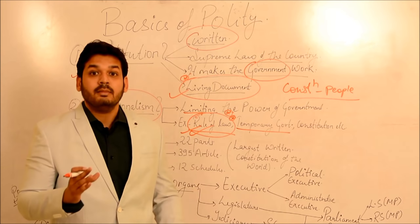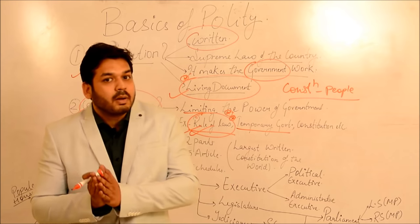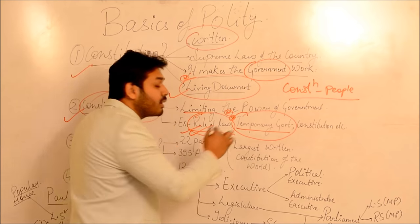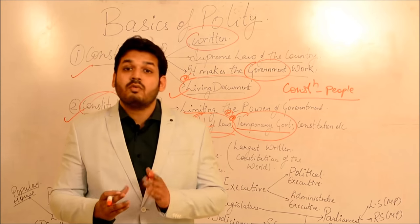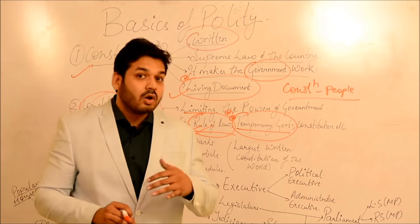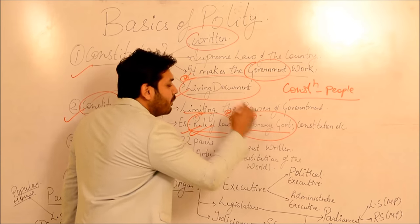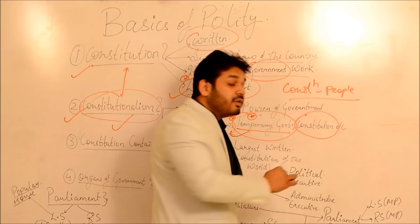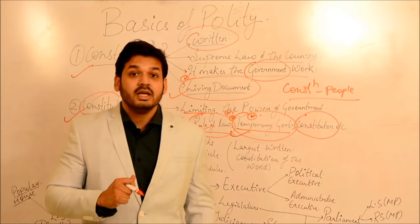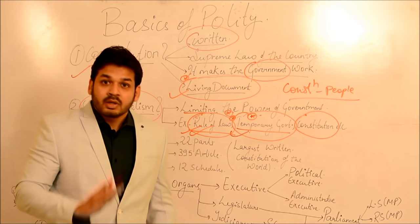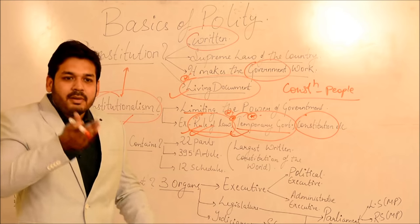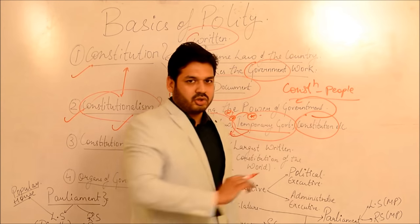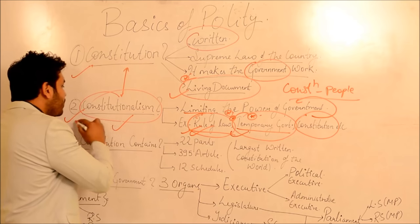Second example of constitutionalism: government is temporary - once a government is formed, it is not permanent. Elections happen every 5 years, so this also makes the government limited - it cannot have unlimited powers because after 5 years it has to go back to the public and ask for votes again. Third example: the Constitution itself is an example of constitutionalism - the government is also bound within the Constitution, therefore the Constitution itself promotes constitutionalism.